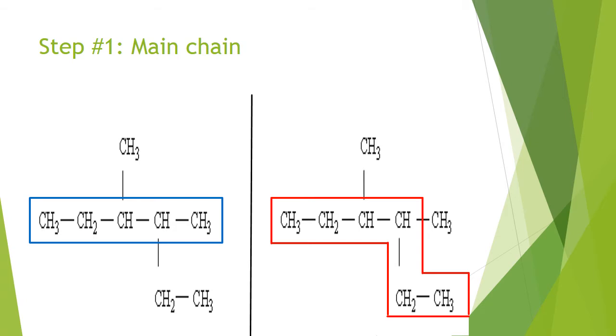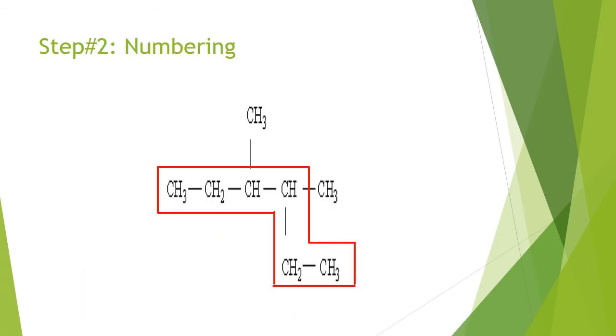Now what decides the correct chain is the length. Here we can see that the blue chain is made up of five carbon members, however the red chain on the right part of the screen is made up of six carbon members. This definitely means that the red chain is the correct main chain. Step number two is numbering.